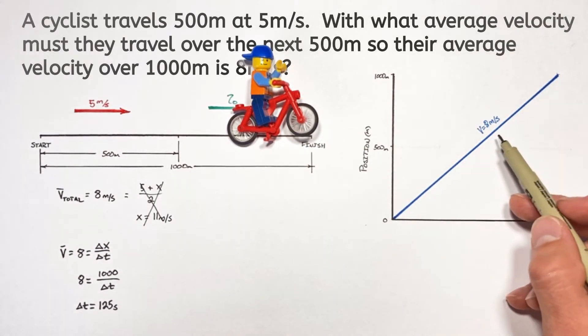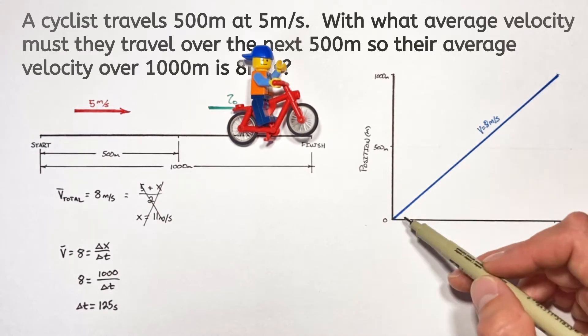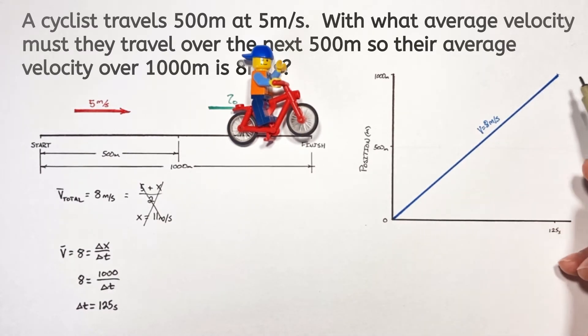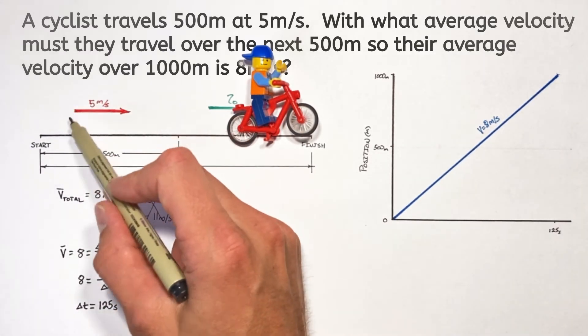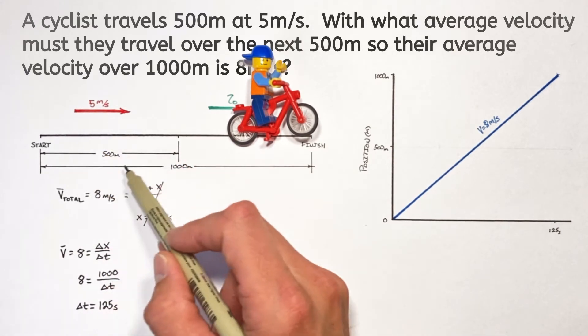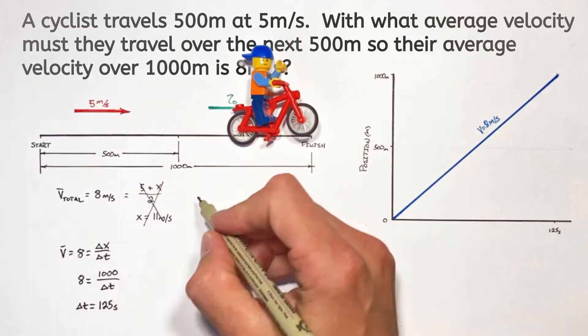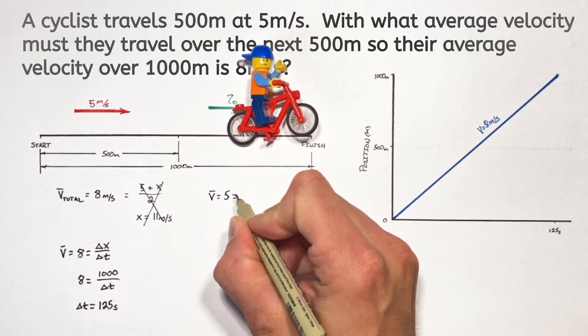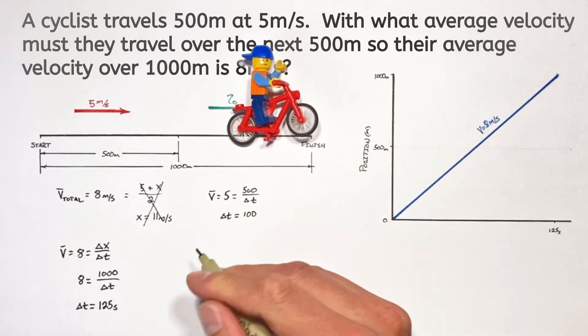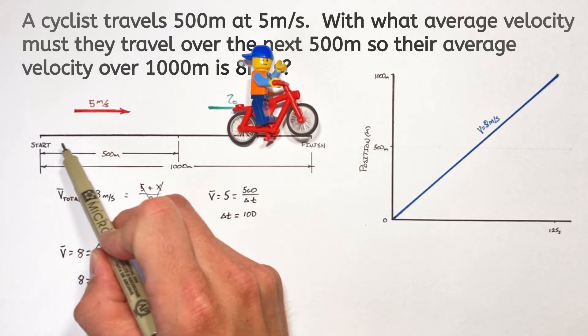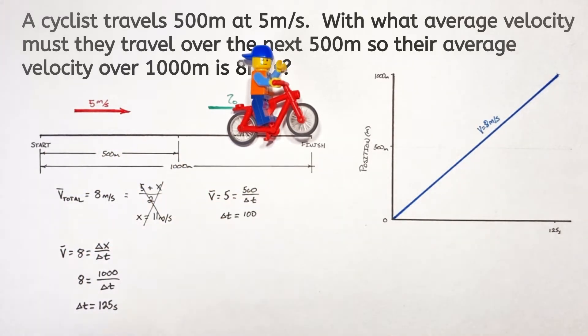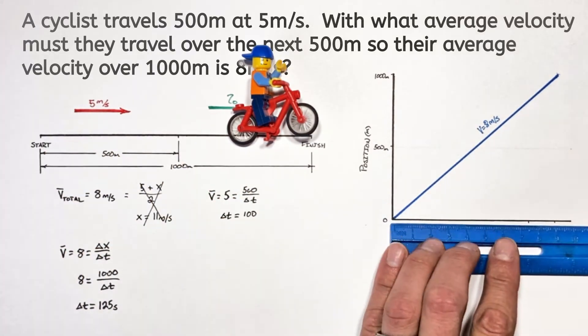Now if a person cruised along at a nice and steady 8 meters per second, we'd see a nice neat diagonal line. But they don't. They're only moving at 5 meters per second for the first 500 meters. Now if you use our equation for average velocity and you do the math on it, you'll find it takes 100 seconds for the person on the bicycle to go the first 500 meters of this trip.